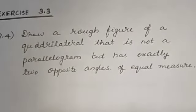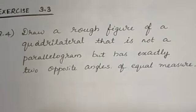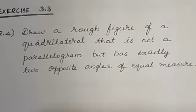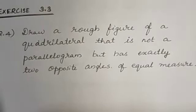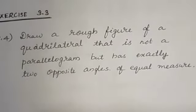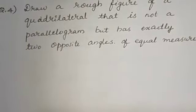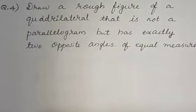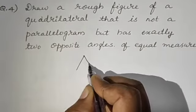Exercise 3.3, Question number 4. Draw a rough figure of a quadrilateral that is not a parallelogram but has exactly two opposite angles of equal measure. The question asks us to draw a figure of a quadrilateral that is not a parallelogram but has opposite angles equal in measure. It should be a quadrilateral with four sides. Opposite angles are in equal measure — we can draw a kite like this.